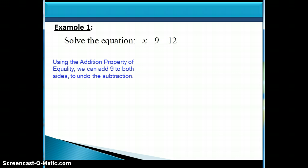So the addition property of equality says that we can add 9 to both sides of the equation, and this will undo the subtraction. Let's see how this looks. So we add 9 to both sides, and notice that when we have negative 9 and positive 9 added together, they add up to 0. So we have x plus 0 on the left, which just adds up to x, and then 12 plus 9 adds up to 21.